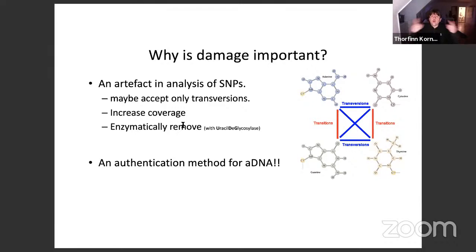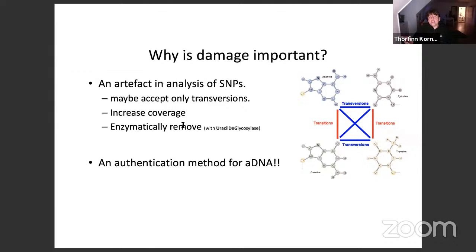There have been recent developments in wet lab protocols — it's now possible to enzymatically remove the damage signal. If you had a C that turned into a uracil, instead of converting it into a thymine, you can convert it back into a C. So for deep sequencing analysis, we remove the damage enzymatically after we have verified and authenticated that the sample was ancient. Before this was possible, people dealt with damage in other ways: either discarding the first and last five base pairs of each read, or removing all transitions from the dataset. This is fine for most demographic analyses but is a problem for looking at specific selected positions.